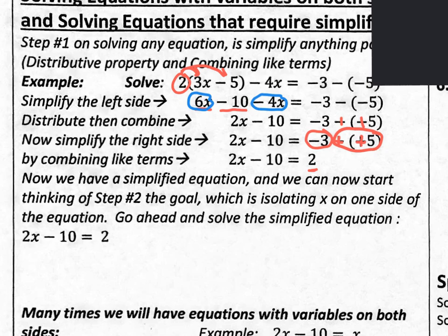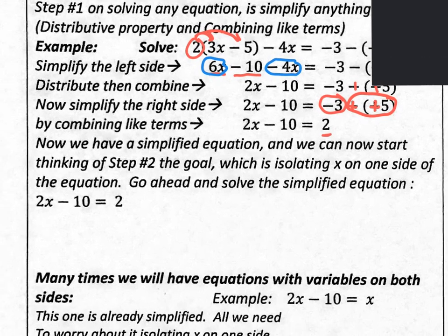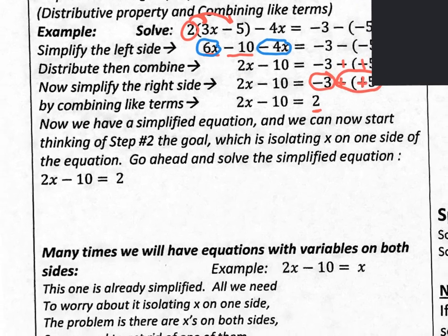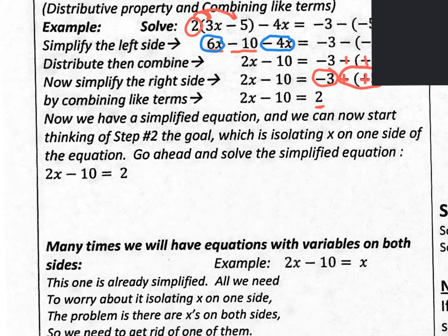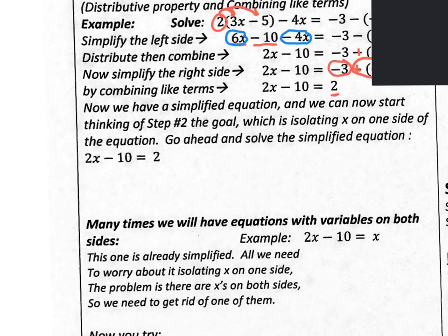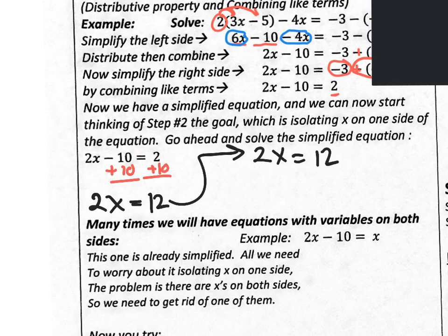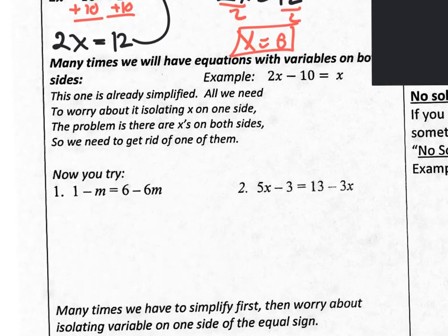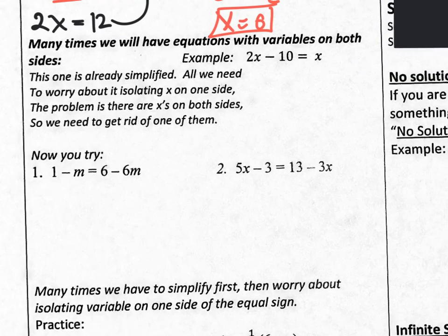There is space to work this out. So let's solve it quickly — you should have gotten X equals 6. Now let's move on to the section that says many times we'll have an equation with variables on both sides — this is what we were talking about in the previous part of this video.